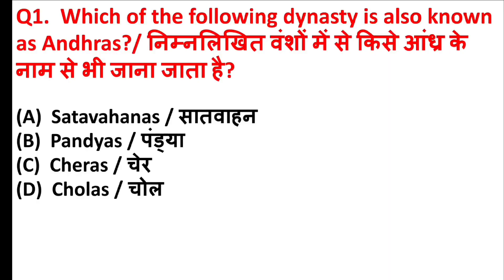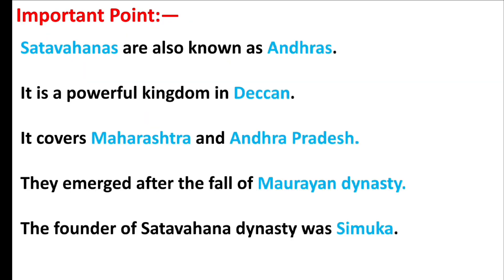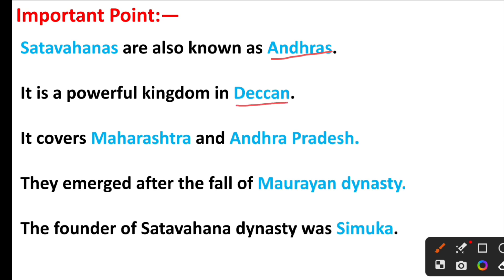Which of the following dynasty is also known as Andhra's? The right answer is option A: Satavahanas. Friends, Satavahanas are also known as Andhra's. It is a powerful kingdom in the Deccan. It covers Maharashtra and Andhra Pradesh. They emerged after the fall of the Mauryan dynasty. The founder of Satavahana dynasty was Simuka.